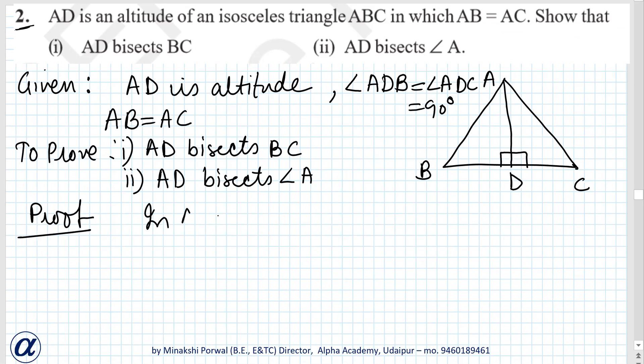In triangle ABD and triangle ACD, AB equals AC. It is given because it's an isosceles triangle. This angle is 90 degrees and this angle is 90 degrees, and this side is common. So which congruence rule?